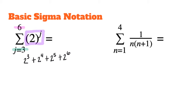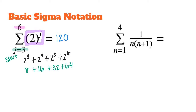Now I evaluate each of these: 2 to the 3rd is 8, 2 to the 4th is 16, 2 to the 5th is 32, and 2 to the 6th is 64. I add those all together and get 120 as my final total. So the 3 is where I started, the 6 is where I stopped, and 2 to the j power is my argument — the expression I used to add.